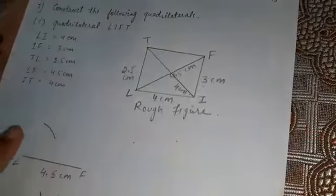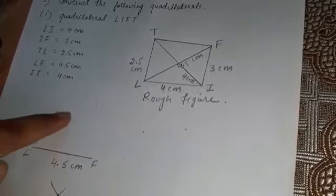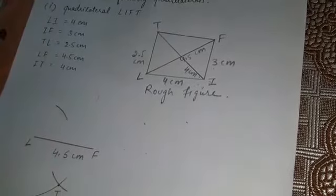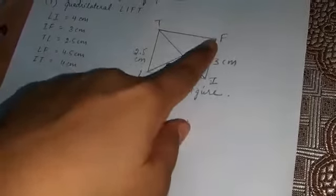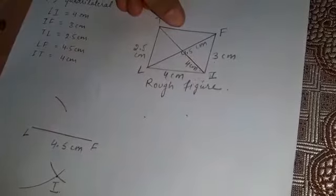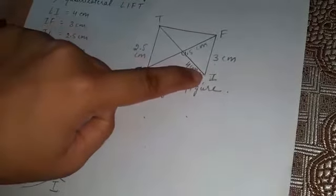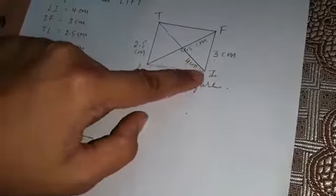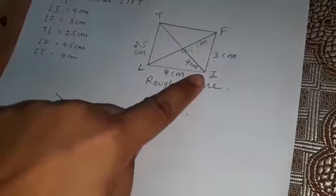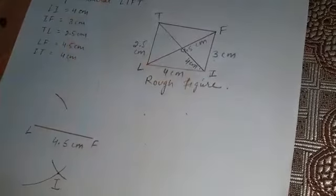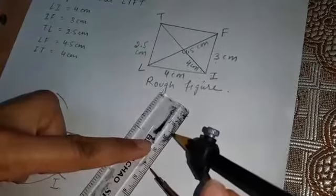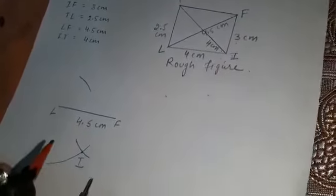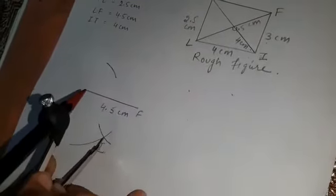To get point T we need one more arc to intersect this arc. That arc cannot be from point F because that distance is not given in the question. However, we do have the distance from point I — IT is 4 centimeters. So we will draw the next arc from point I. Set the compass radius to 4 centimeters and measure it using the scale.